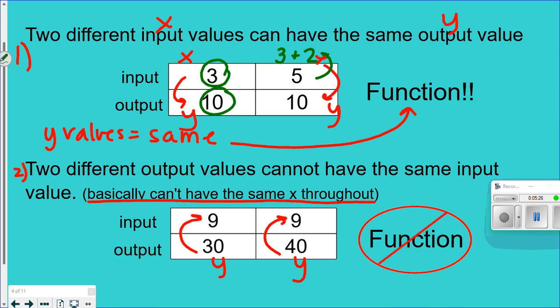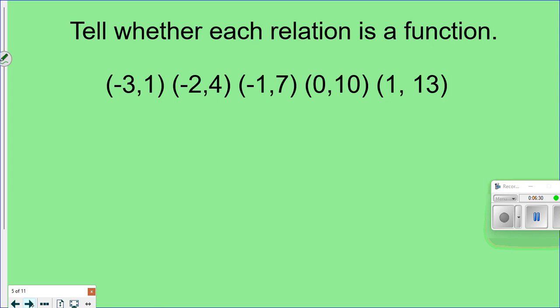Now here's why rule two isn't a function: say you go to the store and buy nine gallons of milk for thirty dollars. If you go back an hour later, there's no way that nine gallons of milk should suddenly cost forty dollars. The same input (nine gallons) should give the same output (thirty dollars). So the most important thing to remember: y values being the same is okay — it's a function. You cannot have the same x with different y values.